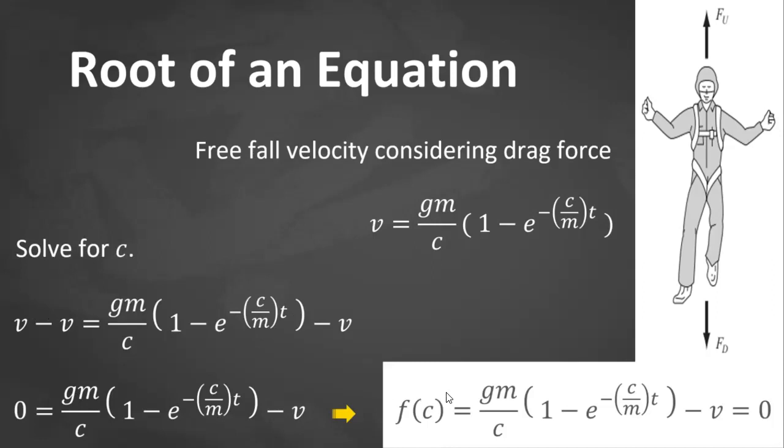So, f of c now is equal to g times m over c times this one minus v. The value of c that makes our function equal to zero, that's the root of the equation. And that also represents the drag coefficient that solves the design problem.